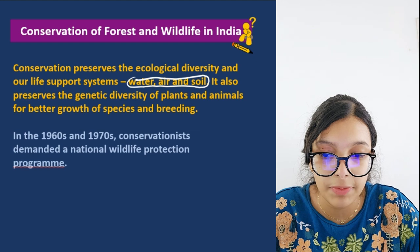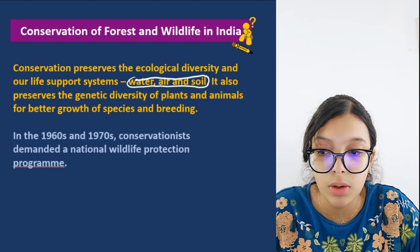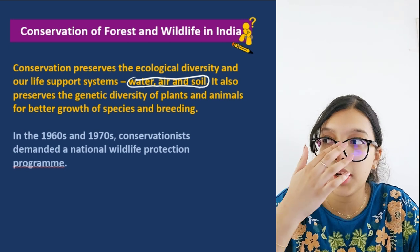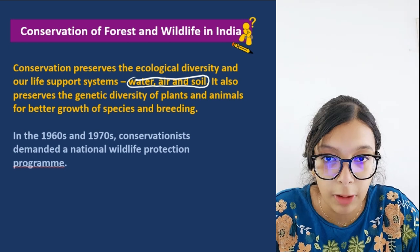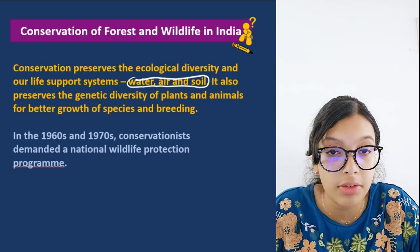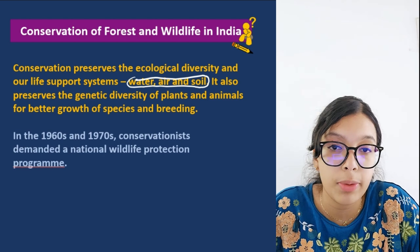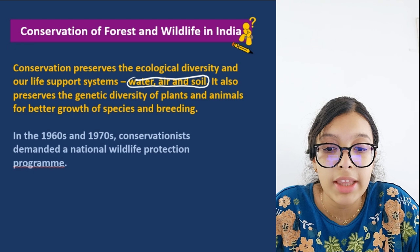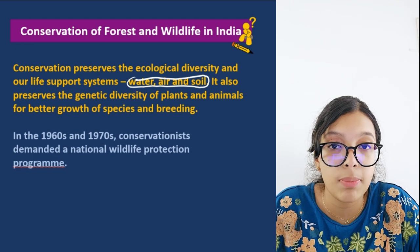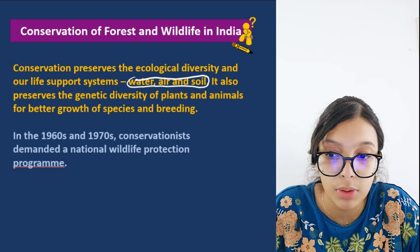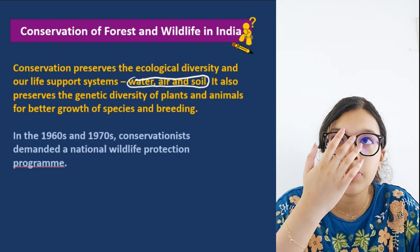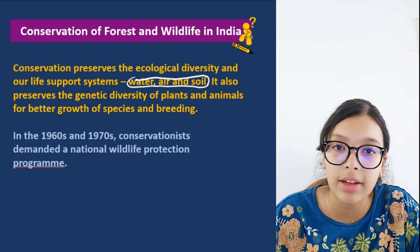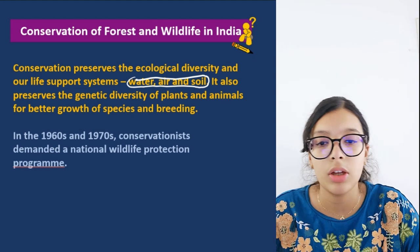In the 1960s and 1970s, conservationists — people who care for the environment and think it is wrong to exploit forests and wildlife — came forward and built up a national wildlife protection program. Under this program there are many schemes protecting different types of animals, including endangered and near-extinct animals.